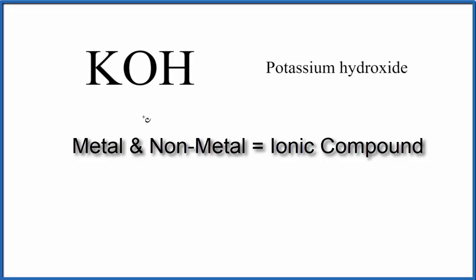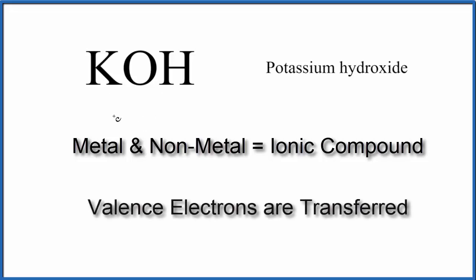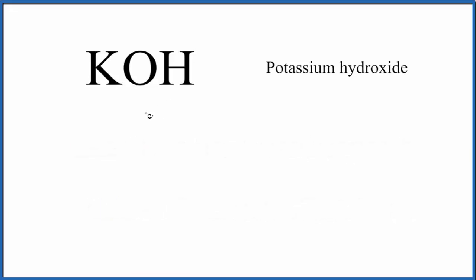When we have a metal and non-metals, it's an ionic compound, and the electrons will be transferred from the metal to the non-metals.